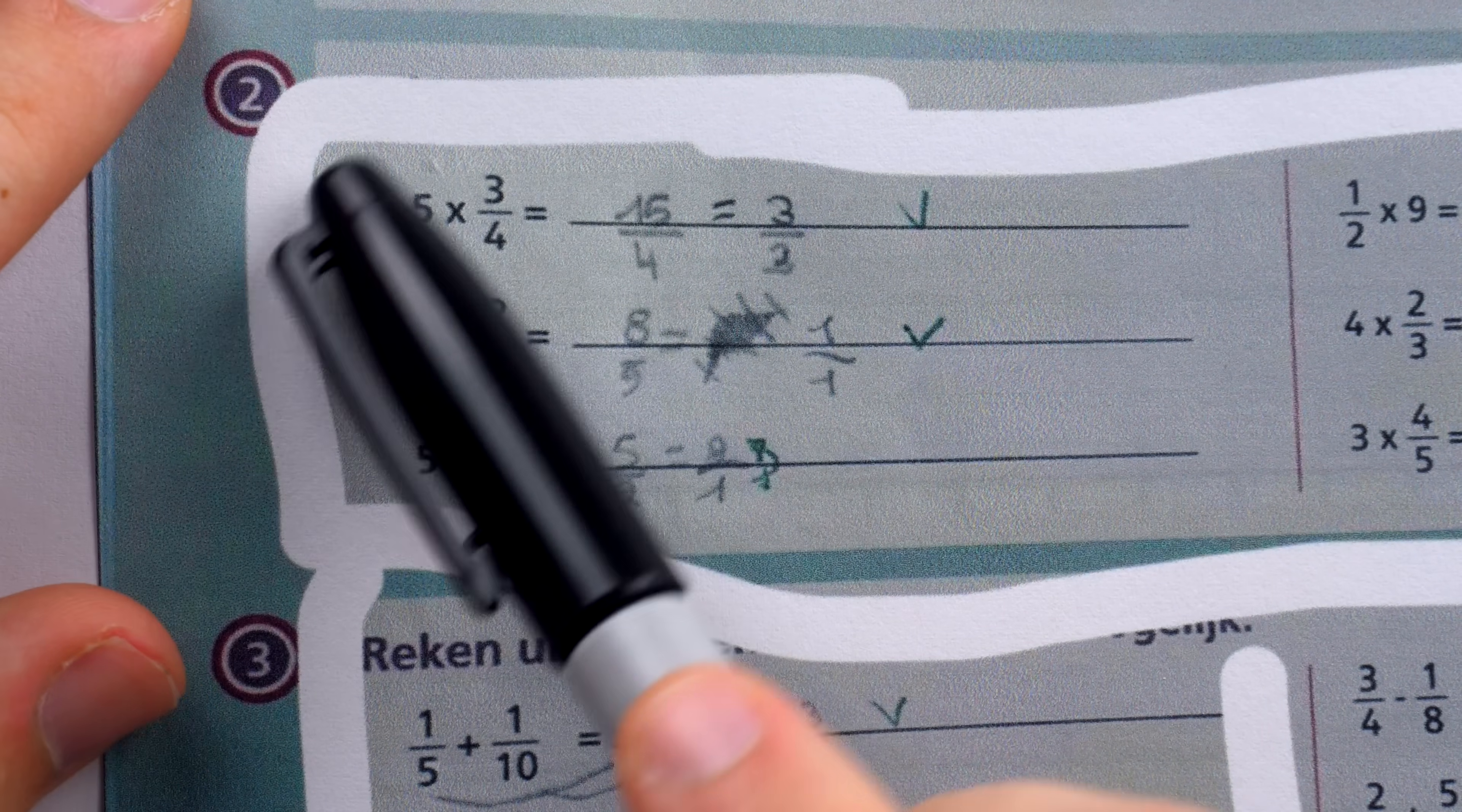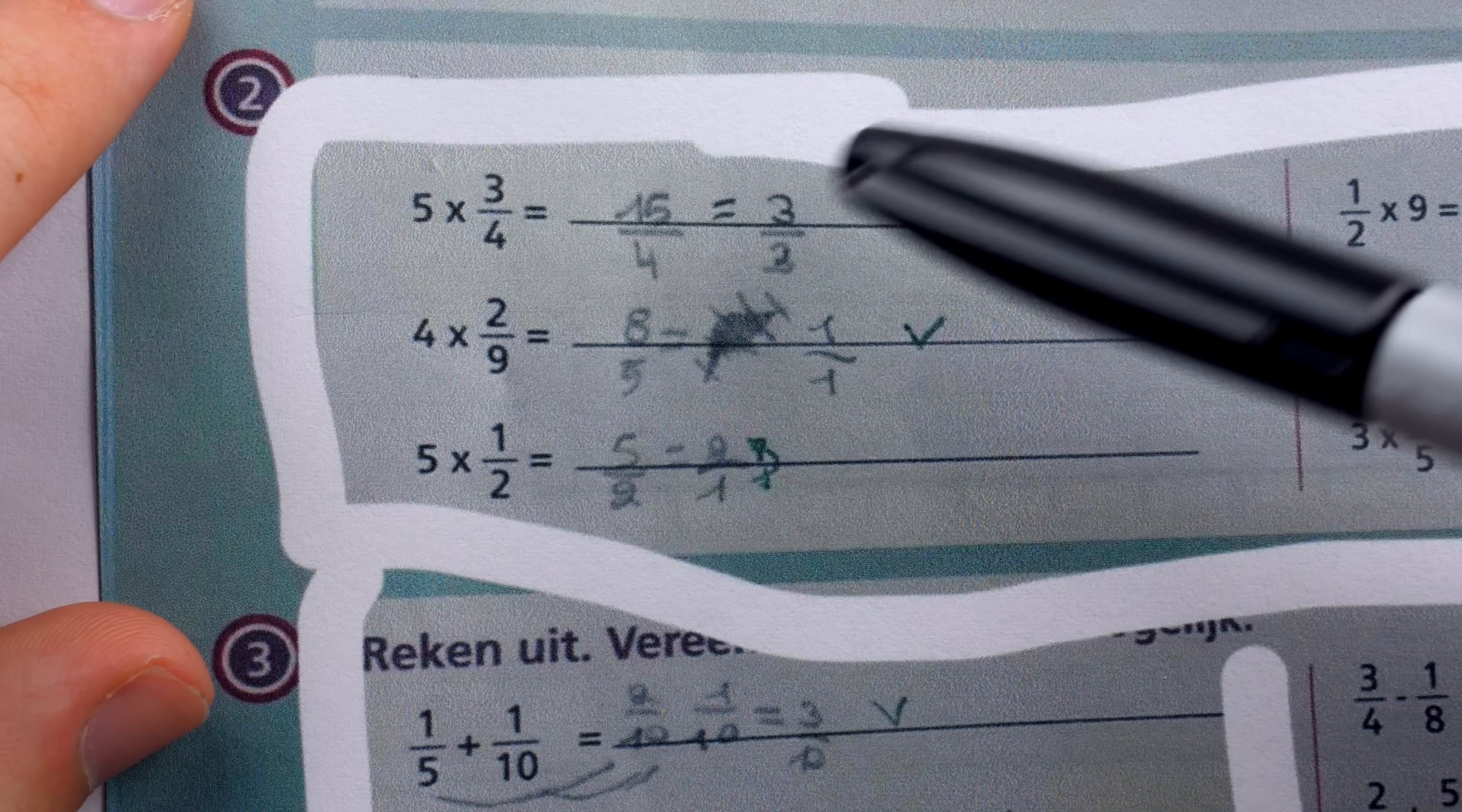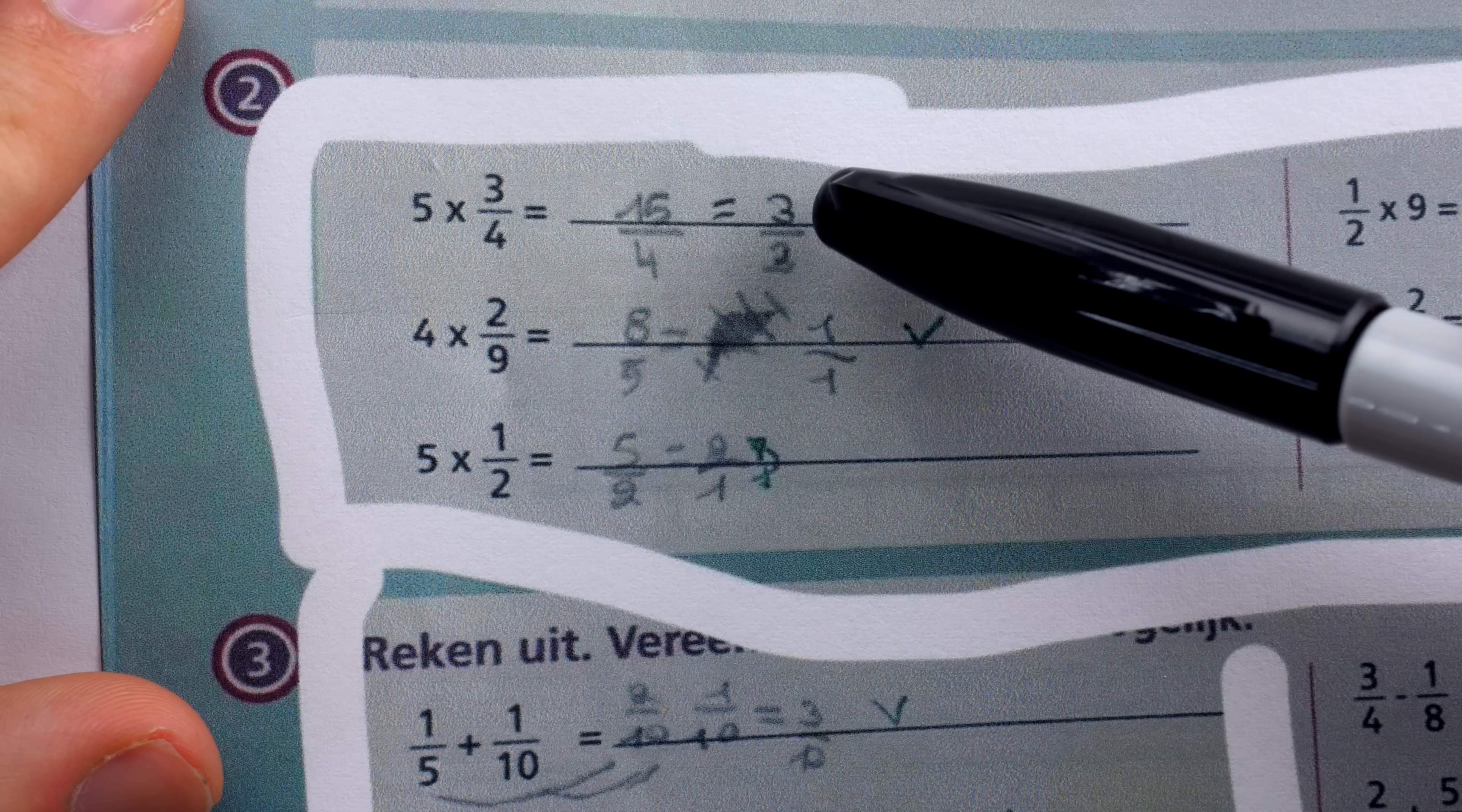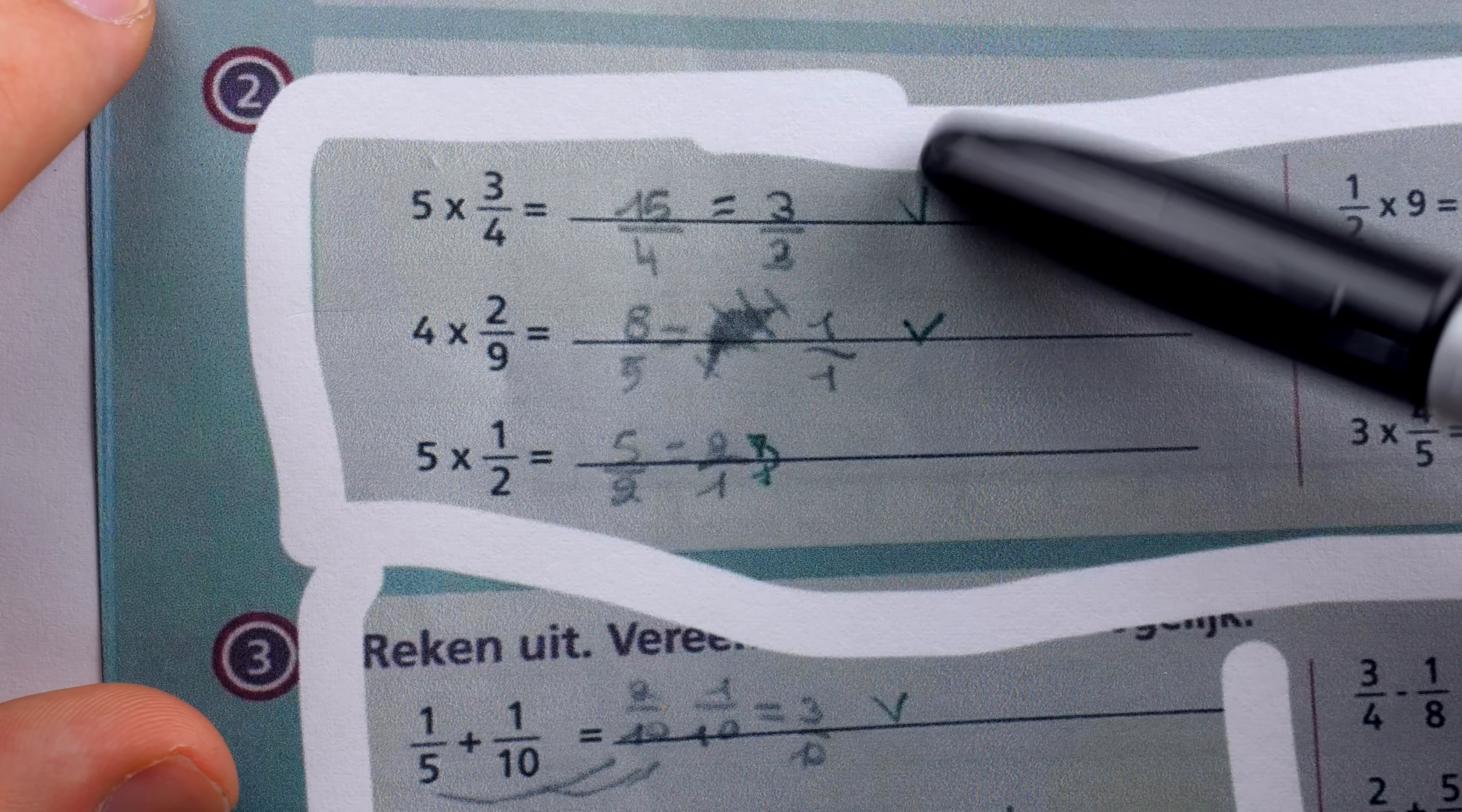The first problem is 5 times 3 fourths, and that's easy. That's just 15 fourths. But then we see the student rewrite it with an equal sign as 3 over 3. Of course, this is not true. 15 over 4 is not equal to 3 over 3. But curiously, the teacher has marked it correct.